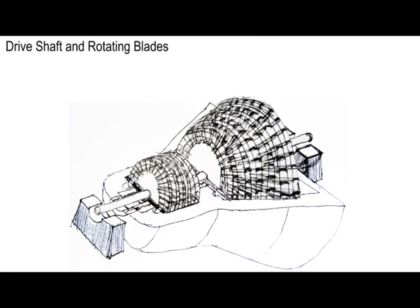The drive shaft and rotating blades are the key components of the turbine. They convert the kinetic energy of the steam into rotational energy, which can be used to generate electricity.